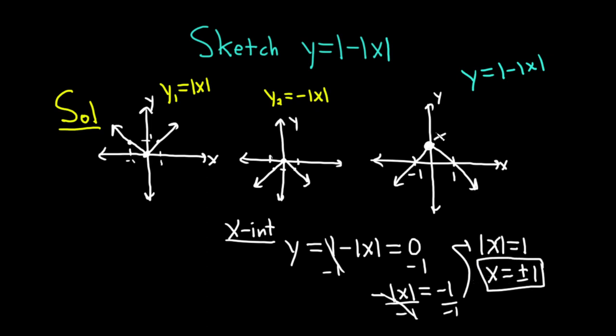The y-intercept would be this point here, which is 0, 1. If you prefer, you can write the x-intercepts as ordered pairs: plus or minus 1, comma 0.